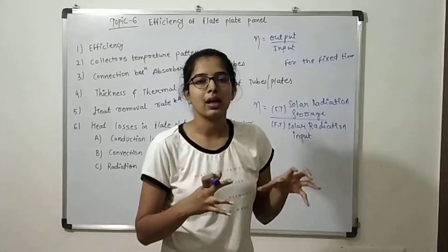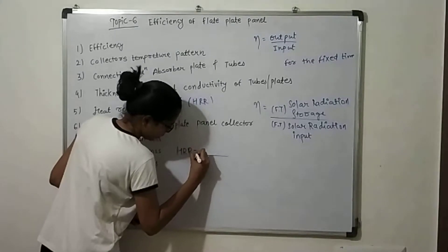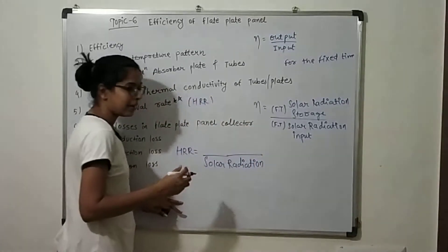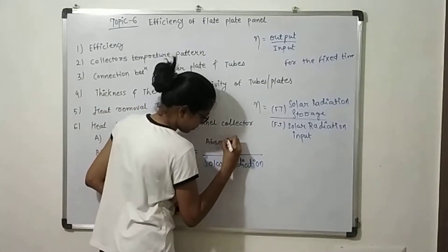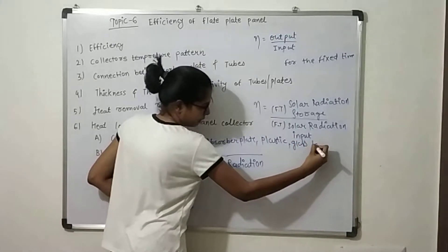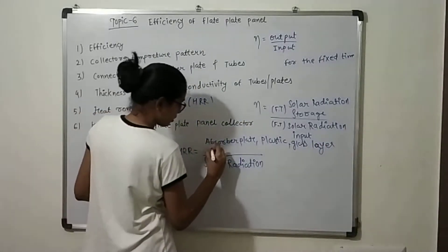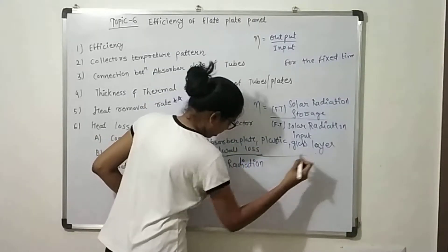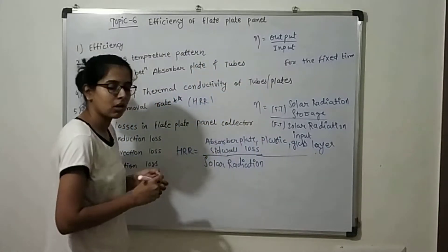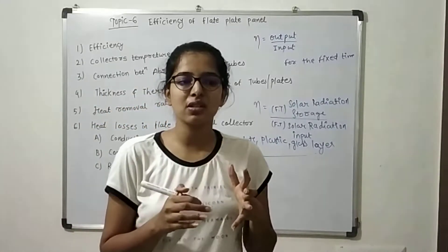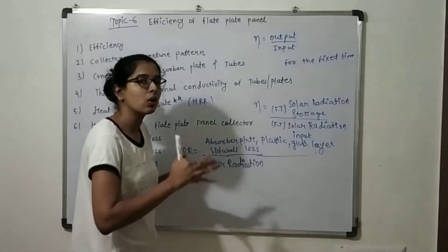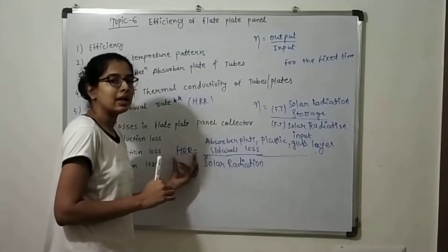This is the input of the solar radiation. HRR is equal to, this is the input of the solar radiation. This is the absorbed plate. But this is the losses. The losses are less than that. So you can absorb the plate. So this is the losses. Heat removal rate, and HRR.